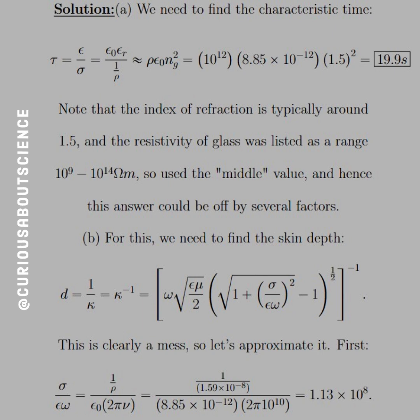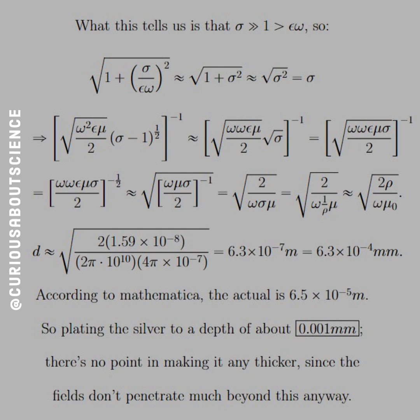What we're trying to do is approximate that sigma over epsilon omega in the first radical. After we plug in resistivity for sigma and the frequency for omega via 2 pi nu, we see that equals 1.13 times 10^8. So what we first established is that sigma is much much greater than 1, and that's much greater than epsilon times omega. Clearly that's a big number, so we can approximate that first radical by just sigma squared. Since sigma is so much greater than epsilon omega, we can approximate to sigma squared, and 1 plus sigma squared is just approximately sigma squared, so the square root of sigma squared equals sigma.